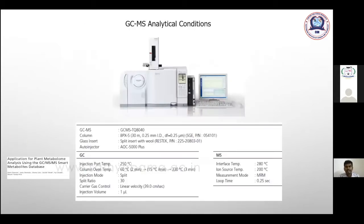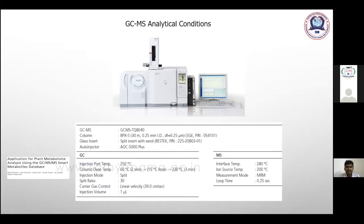For GC-MS analytical conditions, when reading reference articles, they mention conditions like instrument name and model, the column used, the type of injector, and the injection port temperature. In GC-MS there are different temperatures maintained at different parts — the injector, the column oven, the interface (which connects GC with MS), and the ion source — all are part of the analytical conditions to be reported in publications.